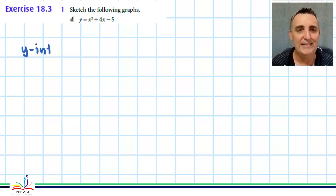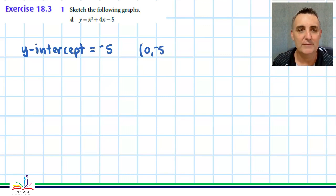The y-axis intercept is easy. It's just the c value, which is negative 5, so we know it goes through the point (0, -5).